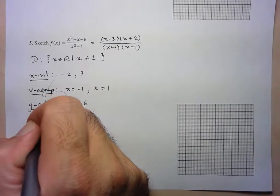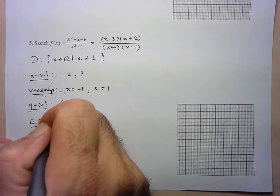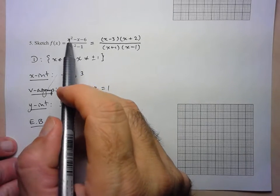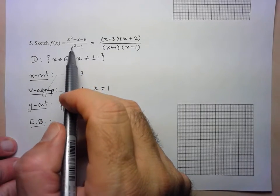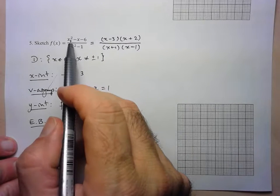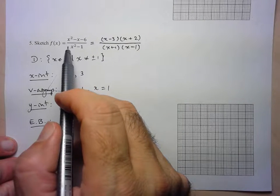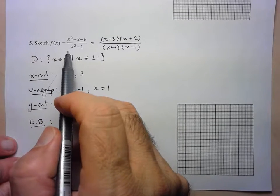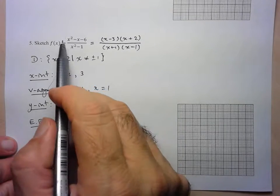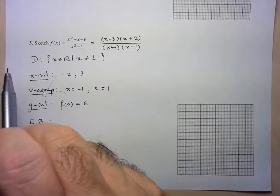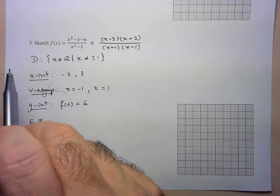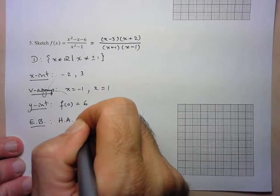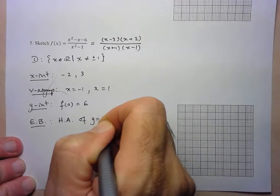Now let's find the end behavior. This is significantly easier than before because we have a quadratic over a quadratic — same degree in numerator and denominator. I just look at the leading coefficients: 1 over 1. So we have a horizontal asymptote of y = 1.